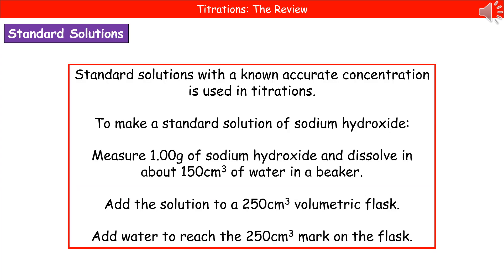When we come to carry out calculations using our titration, we've got to have known concentrations of a solution. So we need to create something called a standard solution — that is a solution with a known accurate concentration. To make that, we start off with a fixed mass and a fixed volume, so we know exactly what concentration we have in our flask, and we can use that as our standard to compare an unknown solution to.